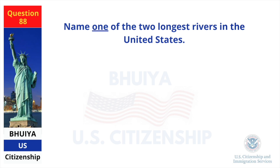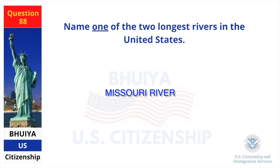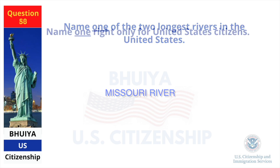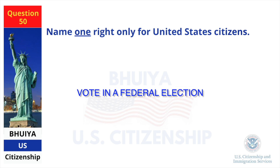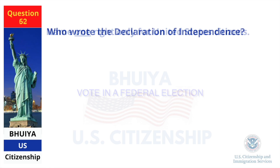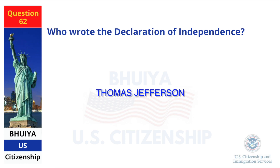Name one of the two longest rivers in the United States. Missouri River. Name one right only for United States citizens. Vote in a federal election. Who wrote the Declaration of Independence? Thomas Jefferson.